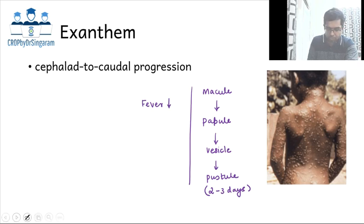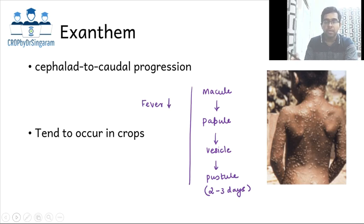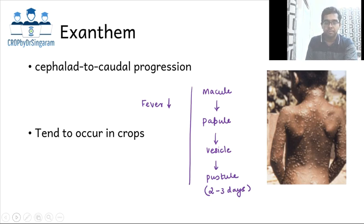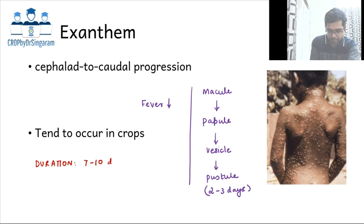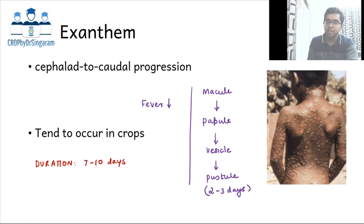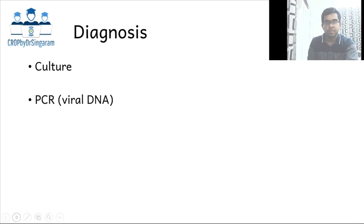Another important distinguishing feature of this rash is that it tends to occur in crops. This occurrence of crops of rash is very unusual in smallpox but very common in monkeypox — another distinguishing feature to remember. The duration of the rash is around seven to ten days, after which the rash tends to crust, scab, and then fall off.